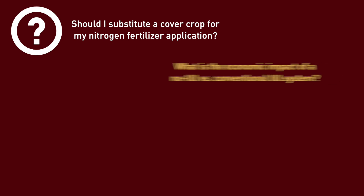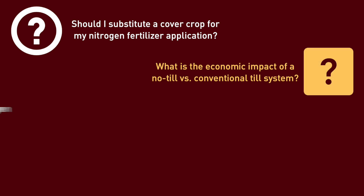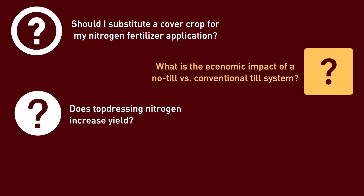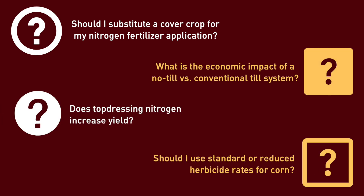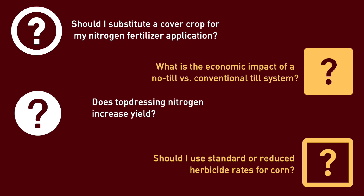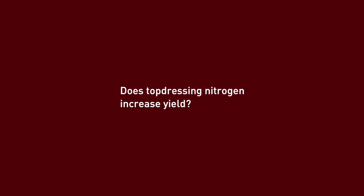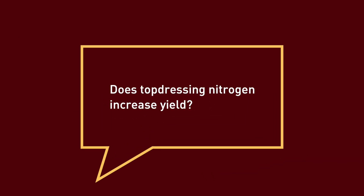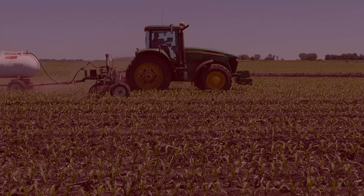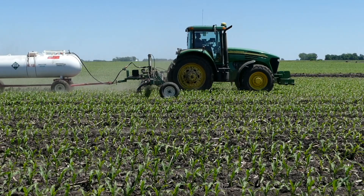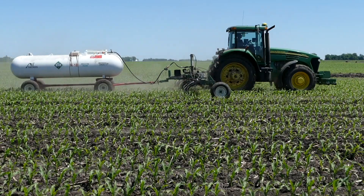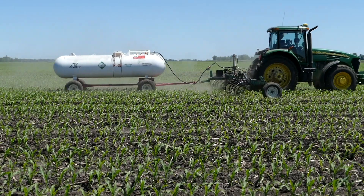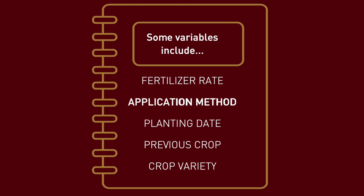One of the first things you need to decide is what is the question you're trying to answer. You want to keep your research question, or what you're going to test, relatively simple. Because you're most likely conducting research with large-scale equipment, your best bet is to look at just one variable, such as fertilizer rate, application method, or planting date.